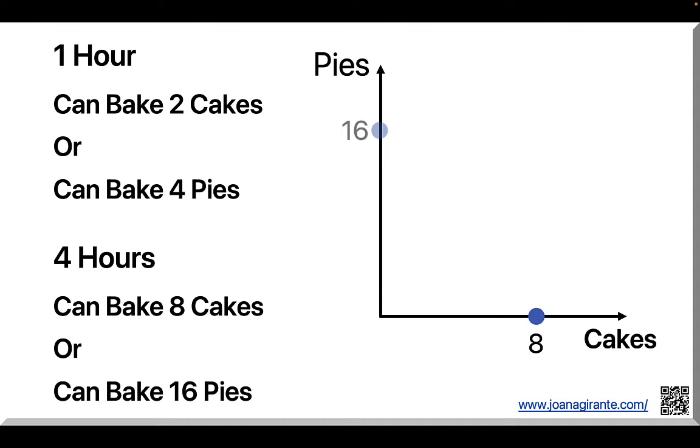Or, we could bake sixteen pies if we don't make any cakes. That's this point: zero cakes, sixteen pies. The line that connects these extremes is the PPF, and it illustrates all combinations of cakes and pies we can bake in four hours.